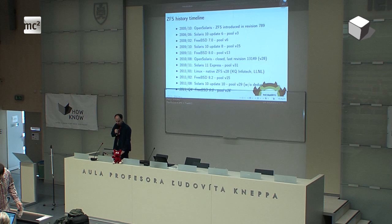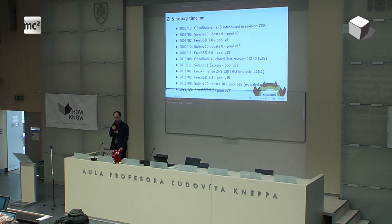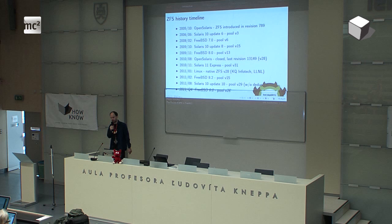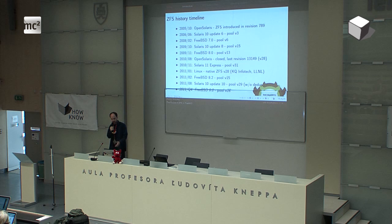Let's look at the ZFS history. The first ZFS came in October 2005, introduced in the OpenSolaris operating system, and it took almost one year to be released in Solaris 10. The very first version was Pool Version 3 in Solaris 10. Pool Version 6 was ported to FreeBSD in 2008. FreeBSD always lagged behind OpenSolaris and Solaris because of very limited manpower in porting — at that time most work was done only by Paweł Jakub Dawydek from Poland.